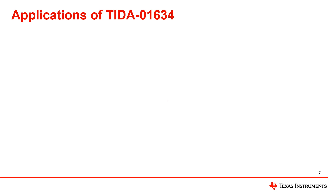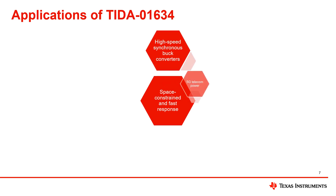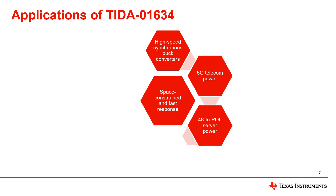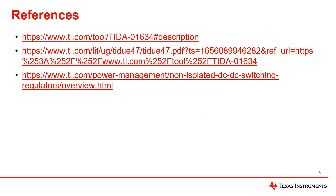This design can be applied to many space constrained and fast response required applications such as high speed synchronous buck converters, 5G telecom power, 48V to POL server power, industrial power supplies, class D audio amplifiers, and envelope tracking. More information can be found in these useful links. Thank you for joining me.